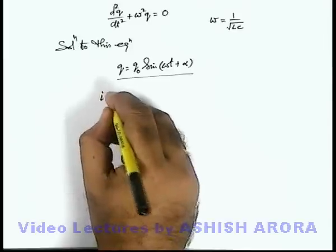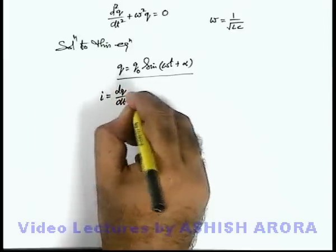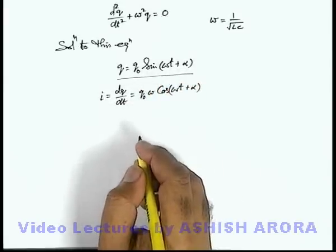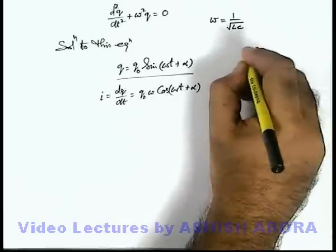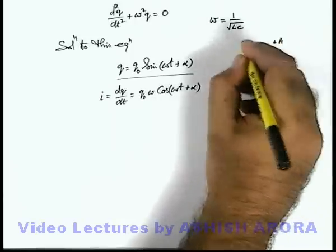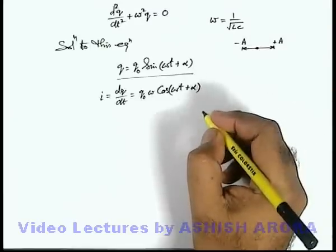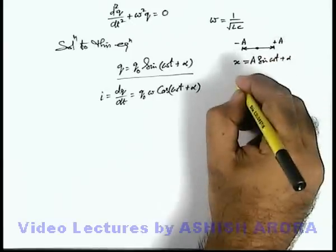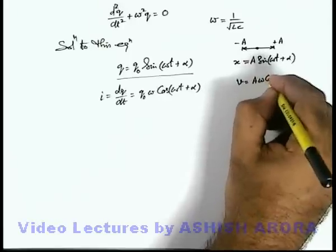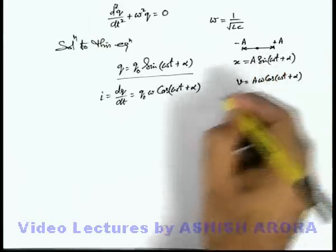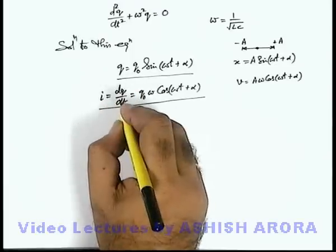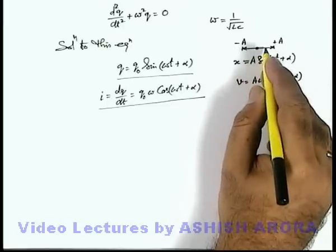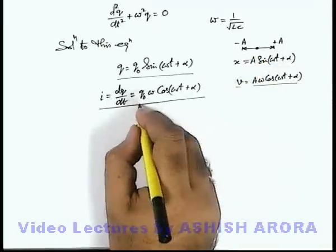If we differentiate the charge expression, we get the current: dq/dt = q₀·ω·cos(ωt + α). Comparing with SHM — where a particle's position is A·sin(ωt + α) and velocity is A·ω·cos(ωt + α) — we can see that current is playing the role of velocity and charge is playing the role of displacement in SHM.